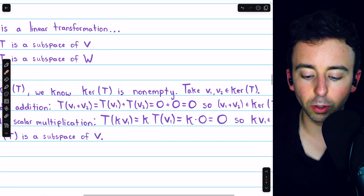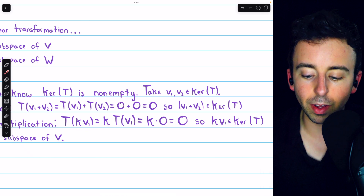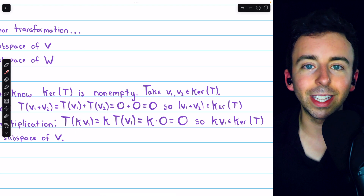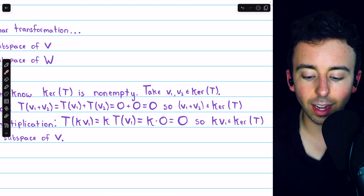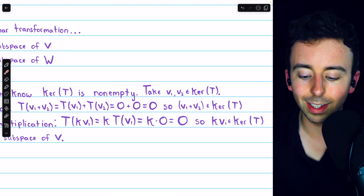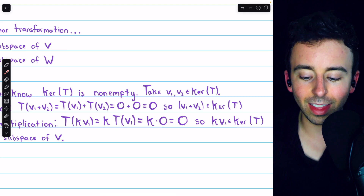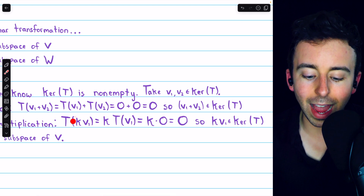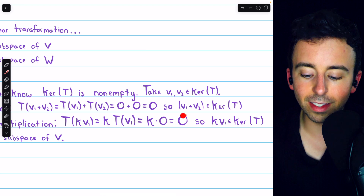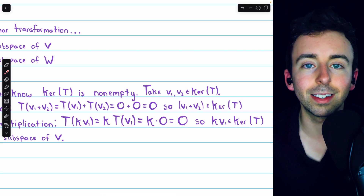Scalar multiplication proceeds similarly. For an arbitrary scalar K and vector V1 from the kernel, the image of K times V1, by the homogeneity property of linear transformations, equals K times T of V1. Since V1 is in the kernel, T of V1 is zero, so this equals K times zero, which is zero. Hence K times V1 is in the kernel, and the kernel is closed under scalar multiplication. This proves that the kernel of T is a subspace of the domain V.